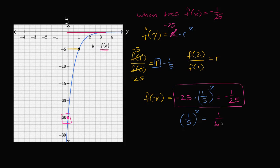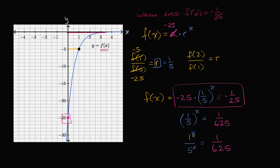One-fifth to the x power is the same thing as one to the x power over five to the x power, which equals one over six twenty-five. One to the x power is just going to equal one, so it doesn't matter that we have that to the x power. We can see that five to the x power needs to be equal to six hundred and twenty-five.